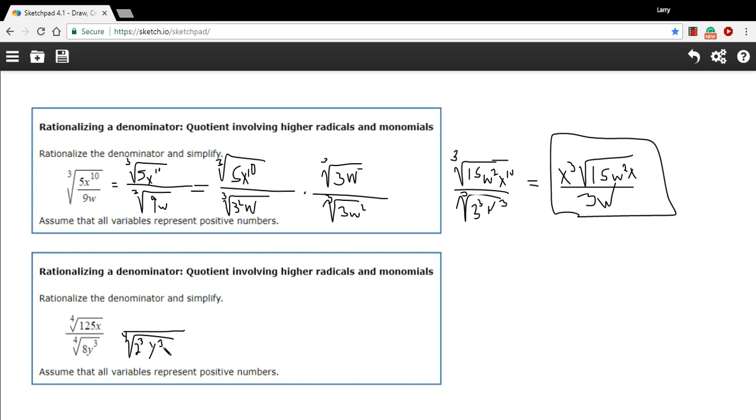If I want to get them to be fourth powers so that I can take the fourth root easily, I just need one more 2 and one more y. So what I'm going to multiply by is the fourth root of 2y.